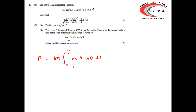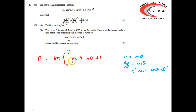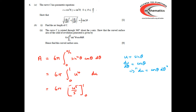Evaluating this integral is straightforward using the substitution u = sin θ. Then du/dθ = cos θ, so du = cos θ dθ. The sin⁴ θ becomes u⁴, and cos θ dθ becomes du. When θ = 0, u = 0; when θ = π/2, u = 1. So the integral becomes 6π times the integral from 0 to 1 of u⁴ du = 6π × [u⁵/5] from 0 to 1 = 6π/5.